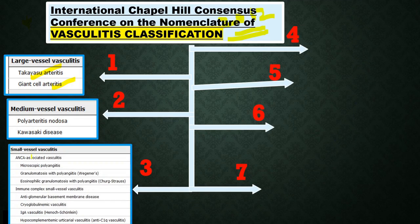The third one is the small vessel vasculitis, which is again classified into ANCA-associated vasculitis and the immune complex small vessel vasculitis. In the ANCA-associated vasculitis we have microscopic polyangiitis and Wegener's — that is granulomatosis with polyangiitis — which is the newer name.